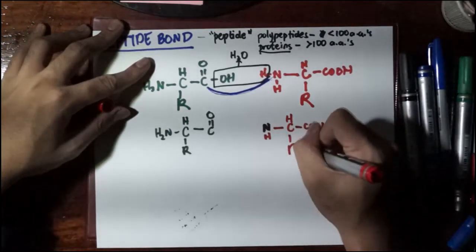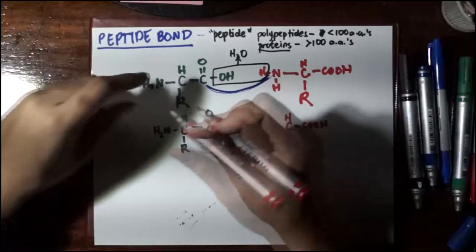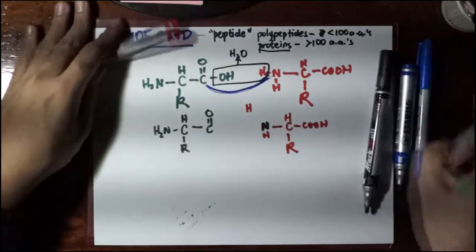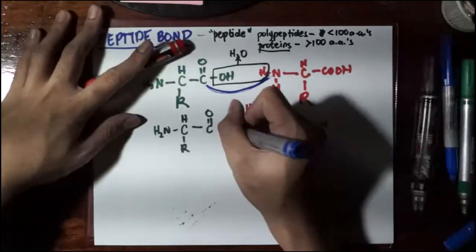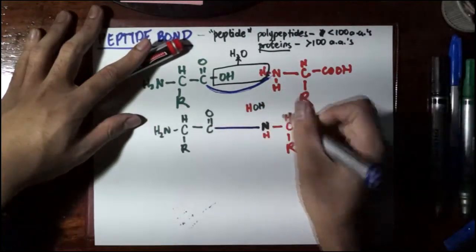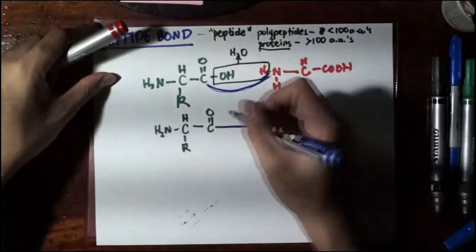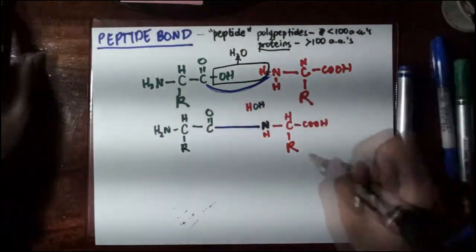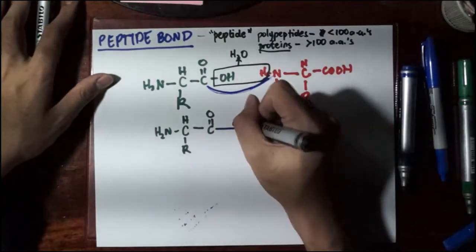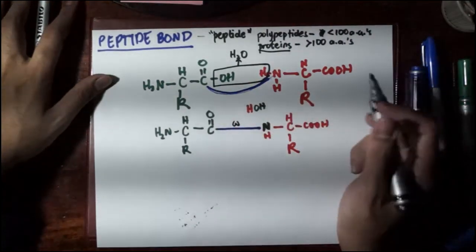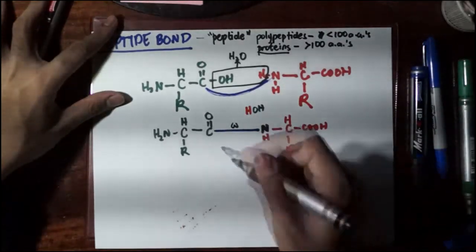The byproduct is water (OH and H). The nitrogen and carbon make a new bond, and this bond — shown here in blue — is the peptide bond, which some references also call the omega bond. In this way, we have formed a dipeptide.